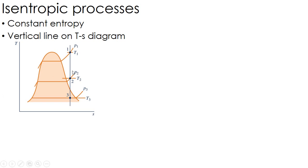If you know a process is isentropic, going from 1 to 2, and if you know state 1 and the pressure at state 2, you can find the temperature at state 2 because the entropy is constant from state 1 to 2.